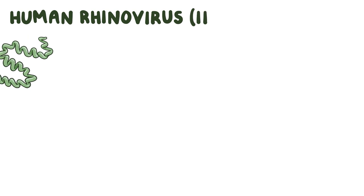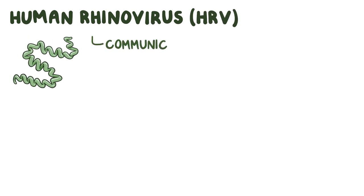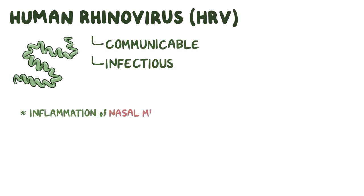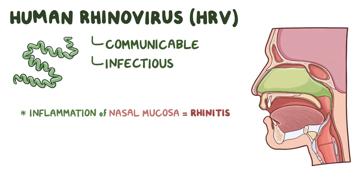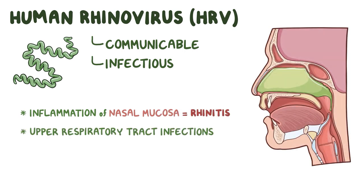Human rhinovirus, or HRV, is a communicable infectious virus that causes inflammation of the nasal mucosa, or rhinitis. It mainly causes upper respiratory tract infections, and it gets its rhino name — meaning nose — because it commonly causes a runny nose, nasal congestion, and sneezing, as well as a sore throat and cough.